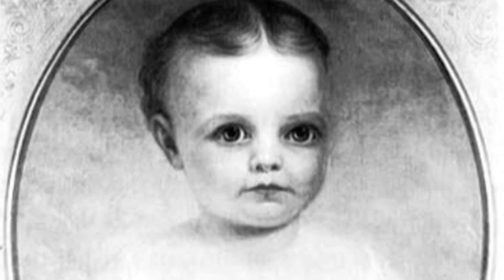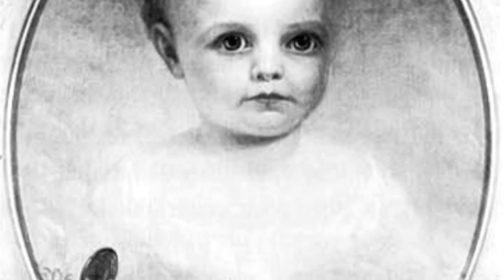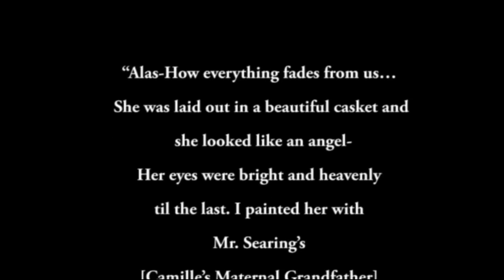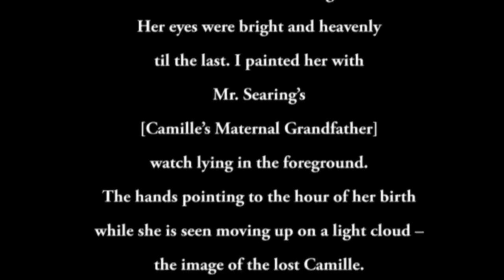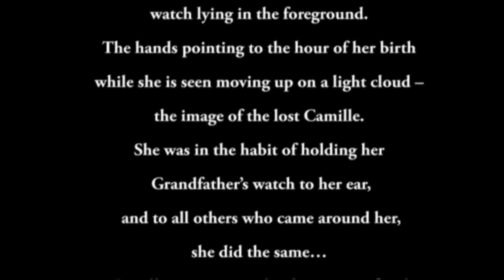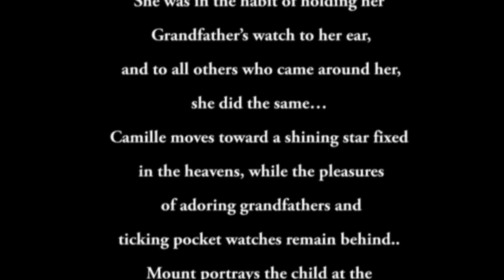This can be gathered from the painting itself, but to further put this into perspective, here's a letter from the painter Shepard Alonzo Mount explaining the painting to his son, as well as further analysis provided by Deborah Johnson in her book 'Shepard Alonzo Mount: His Life and His Art.' Mount writes: 'Alas, how everything fades from us. She was laid out in a beautiful casket and she looked like an angel, her eyes bright and heavenly to the last. I painted her with Mr. Searings — Camille's maternal grandfather — watch lying in the foreground, the hands pointing to the hour of her birth while she is seen moving up on a light cloud, the image of the lost Camille. She was in the habit of holding her grandfather's watch to her ear and to all others who came around her she did the same. Camille moves to a shining star, fixed in the heavens, while the pleasures of adoring grandfathers and ticking pocket watches remain behind.'